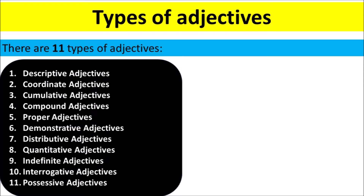Types of Adjectives. There are 11 types of adjectives: Descriptive Adjectives, Coordinate Adjectives, Cumulative Adjectives, Compound Adjectives, Proper Adjectives, Demonstrative Adjectives, Distributive Adjectives, Quantitative Adjectives, Indefinite Adjectives, Interrogative Adjectives, and Possessive Adjectives.